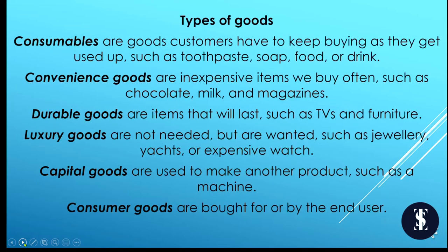Types of goods: consumables are goods that customers have to keep buying as they get used up — things like toothpaste, soap, food or drink. Convenience goods are inexpensive items that we buy often, such as chocolate, milk or magazines. Durable goods are items that will last — think about TVs or furniture. Luxury goods are not needed but are wanted — think about jewellery, yachts or an expensive watch.